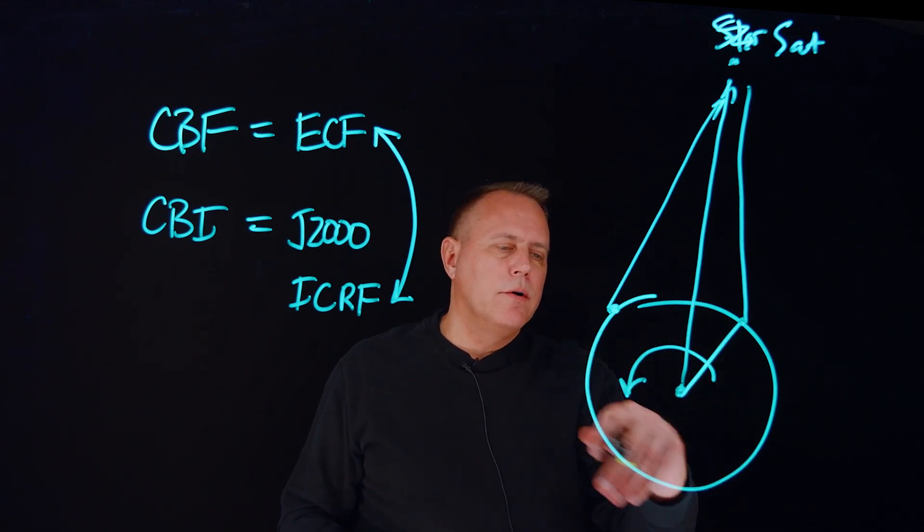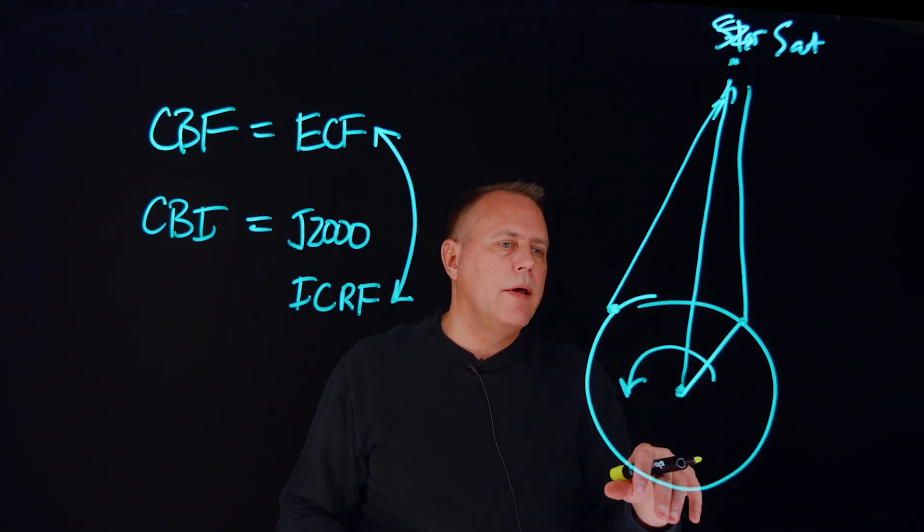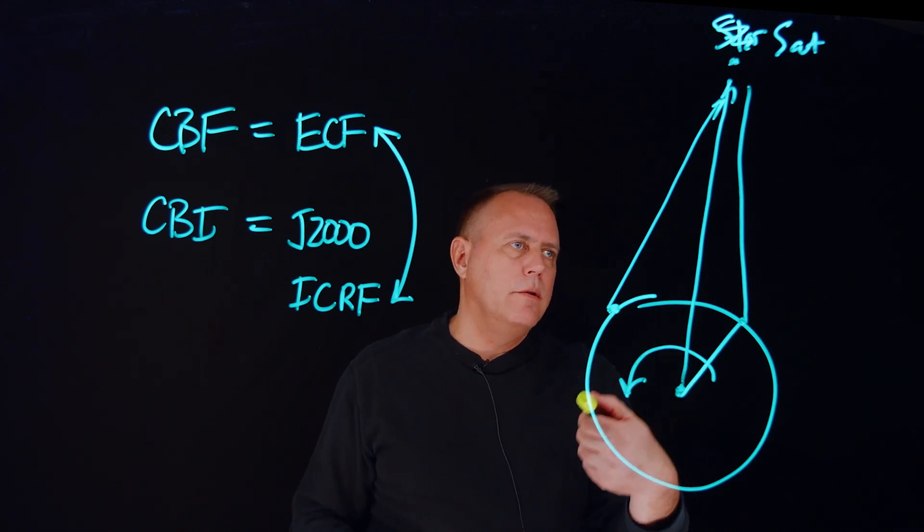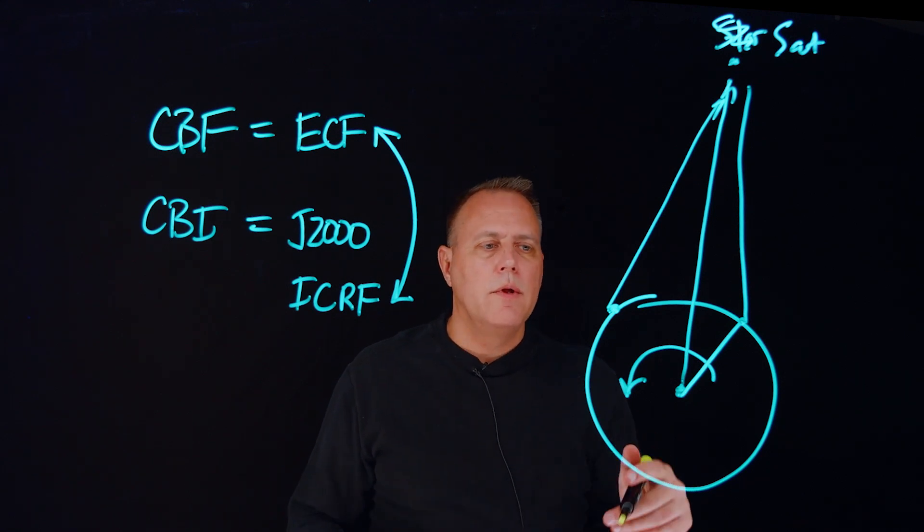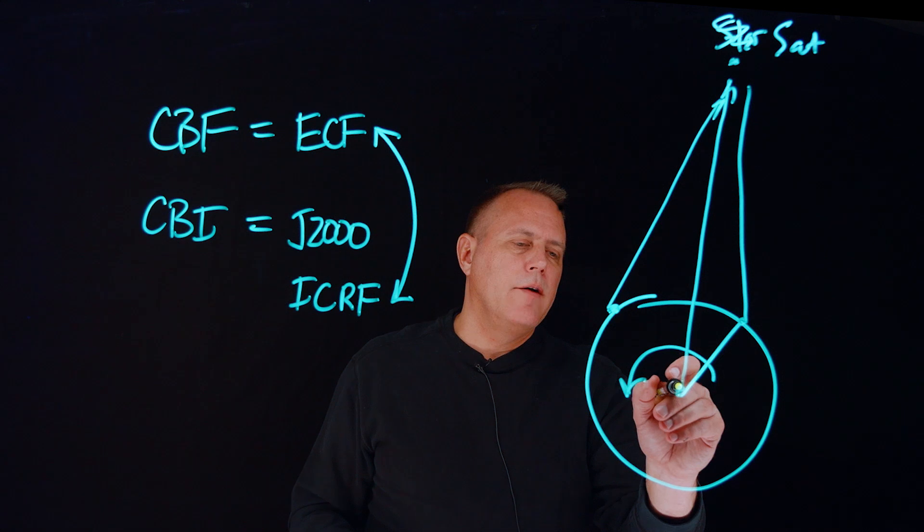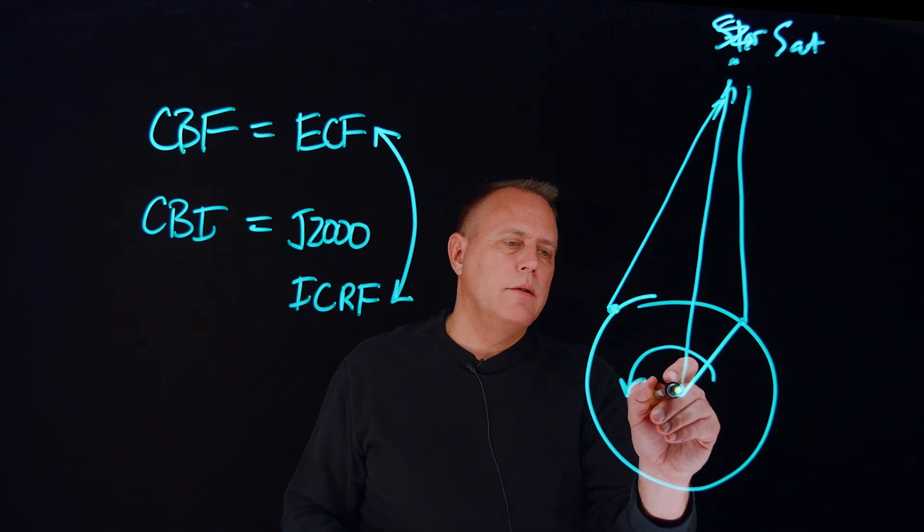But on top of the pure earth rotation, it turns out that the spin axis of the earth isn't really through the geometric north. There's some additional subtle effects where we have precession, which is that the spin axis can be off from true north a little bit.